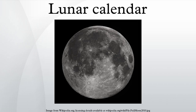Some lunar calendars are calibrated by annual natural events which are affected by lunar cycles as well as the solar cycle. An example of this is the lunar calendar of the Banks Islands, which includes three months in which the edible palolo worm masses on the beaches. These events occur at the last quarter of the lunar month, as the reproductive cycle of the palolos is synchronized with the moon.